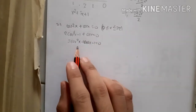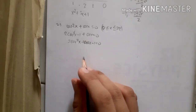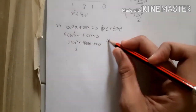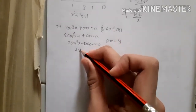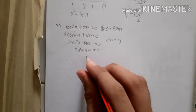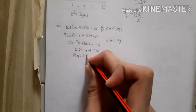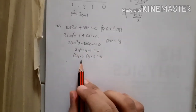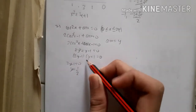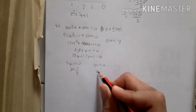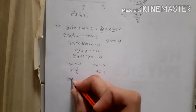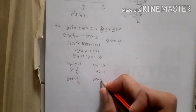We let y = cos x to factorize: 2y² + y − 1 = 0. This factors into (2y − 1)(y + 1) = 0, giving roots y = 1/2 and y = −1. Since y = cos x, this means cos x = 1/2 or cos x = −1.